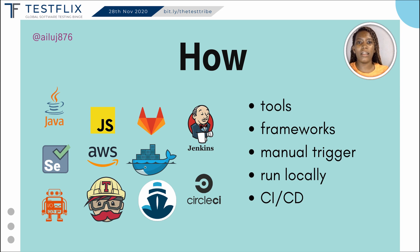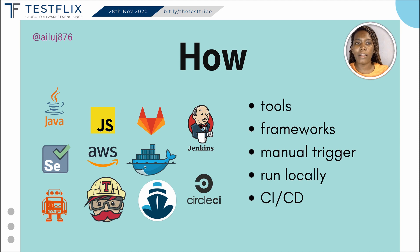If your team knows Java, you'd want to select test automation frameworks for Java. If they know Ruby or JavaScript — and if you're familiar with WebDriver.io versus Cypress — you need to consider all of those factors when choosing a test automation tool, as well as your goal for automation. If your goal was to have CI/CD, you need to have that factored in.